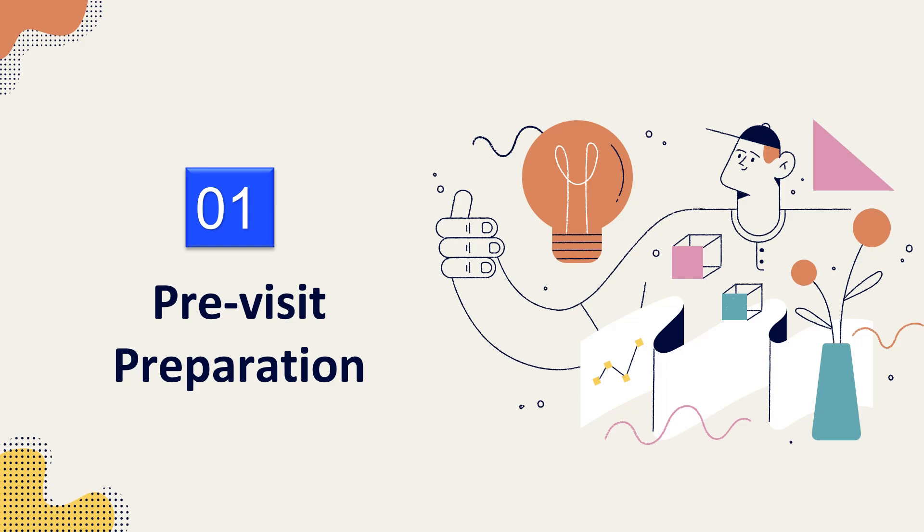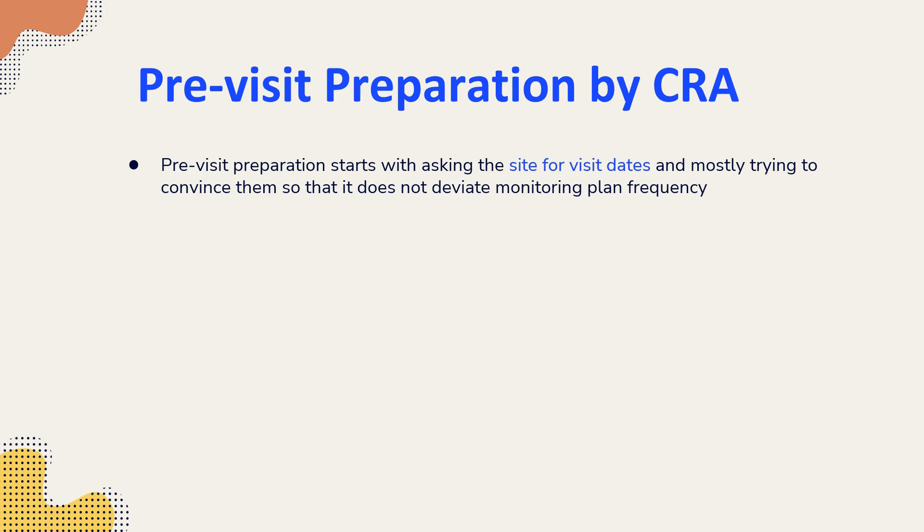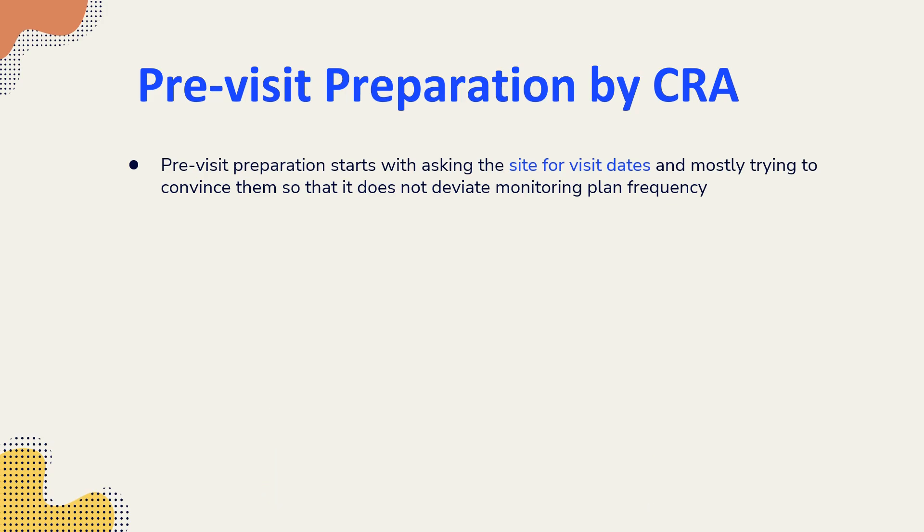First and foremost, we must understand what pre-study preparation is and how the CRA prepares for a monitoring visit. The pre-visit preparation starts from seeking dates from the site. Whenever a CRA plans a visit, he has to check the monitoring plan and visit frequency to avoid deviations. When the CRA asks for a site date, the site usually has multiple clinical trials running simultaneously with other CRAs or monitors also visiting. Convincing them to agree on an available date that doesn't deviate the monitoring plan is one of the bigger challenges.